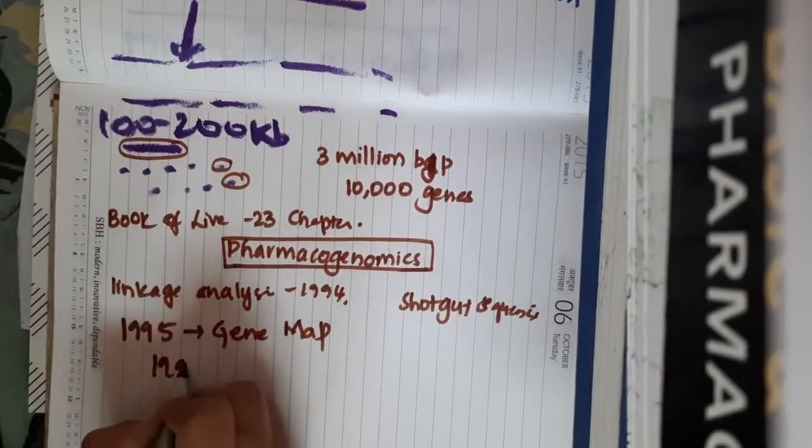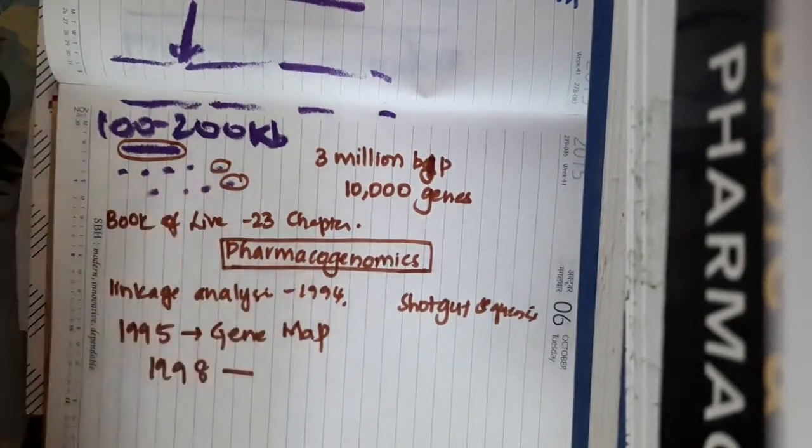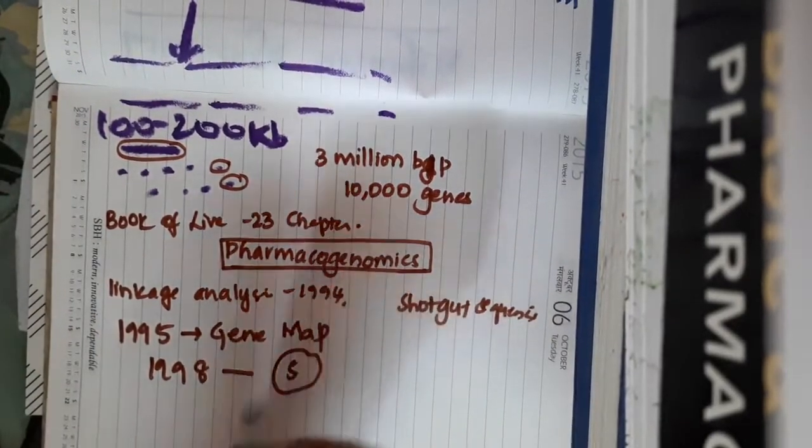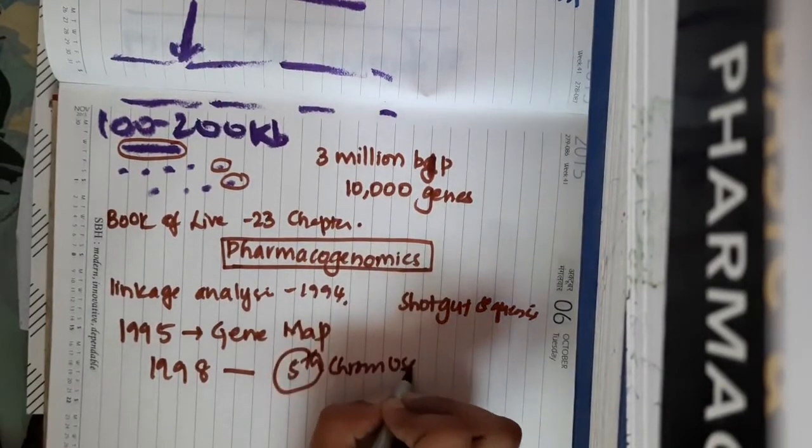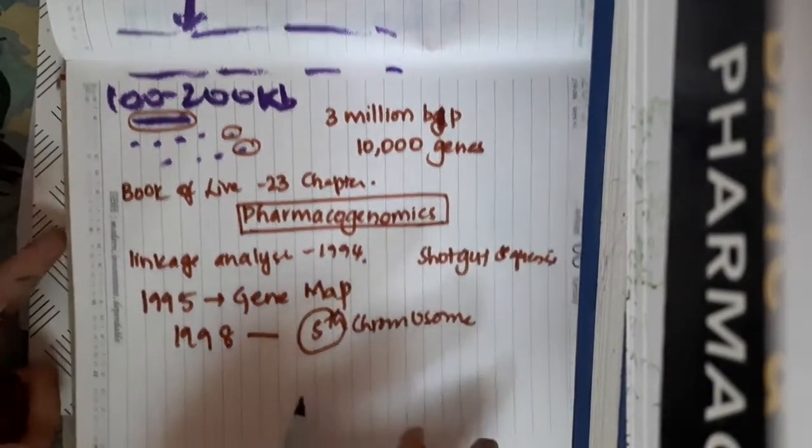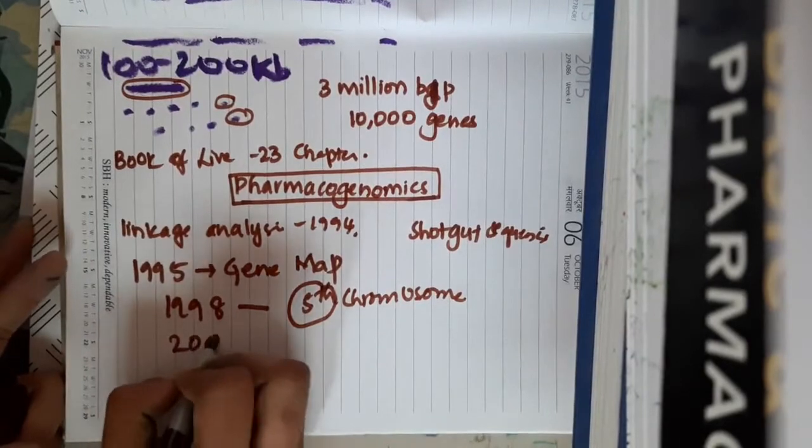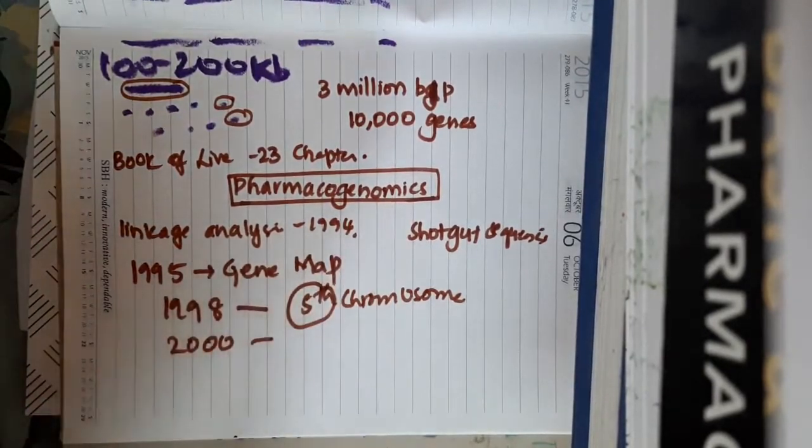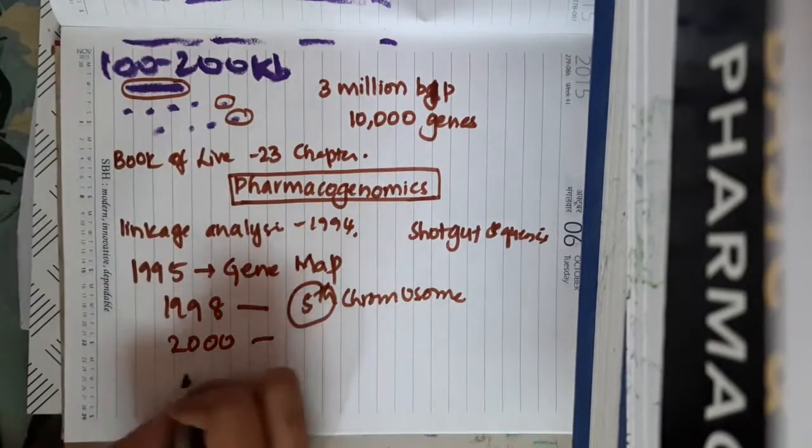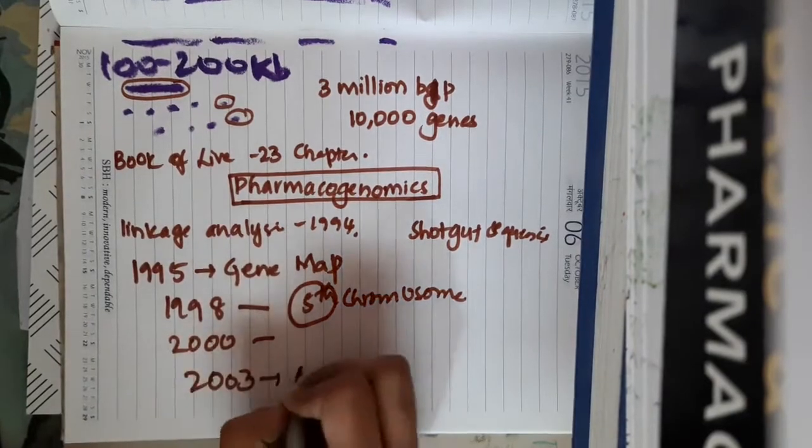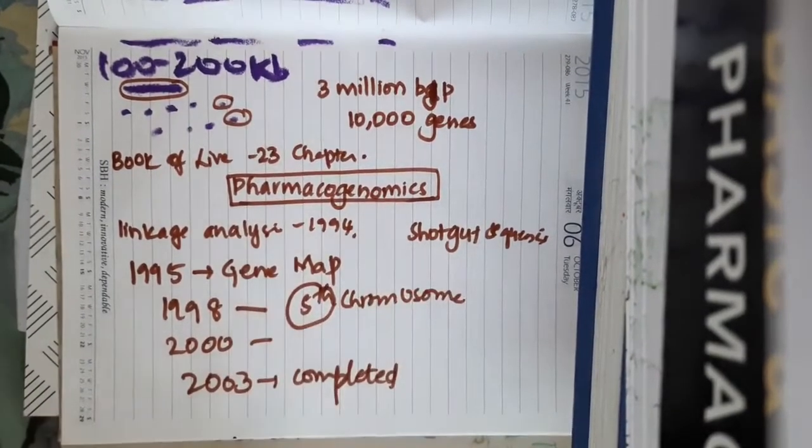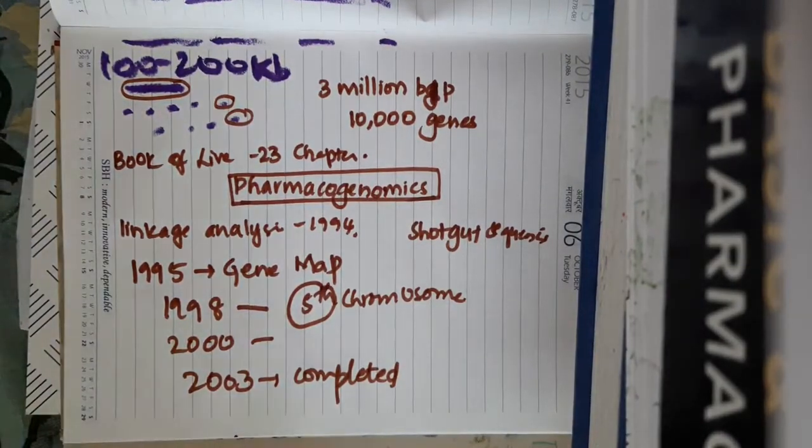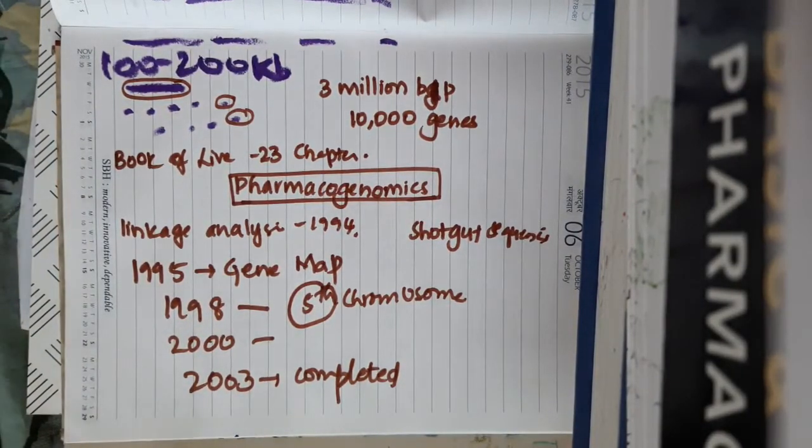By December 1998, the whole fifth chromosome, human fifth chromosome is completely sequenced. By 2000, the working draft of human DNA sequence has been announced. By 2003, the complete project is completed and all the 23 chromosomes have been sequenced in this Human Genome Project.